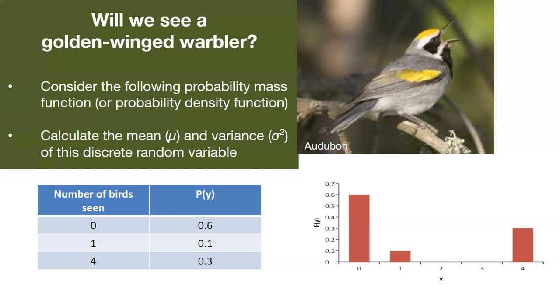Now as it turns out, with this small data set, there's a possibility that we could find two or three warblers, but it's just not a part of this random variable and not a part of this probability. And so we're going to work through a calculation where we calculate the mean and the variance for this discrete random variable.